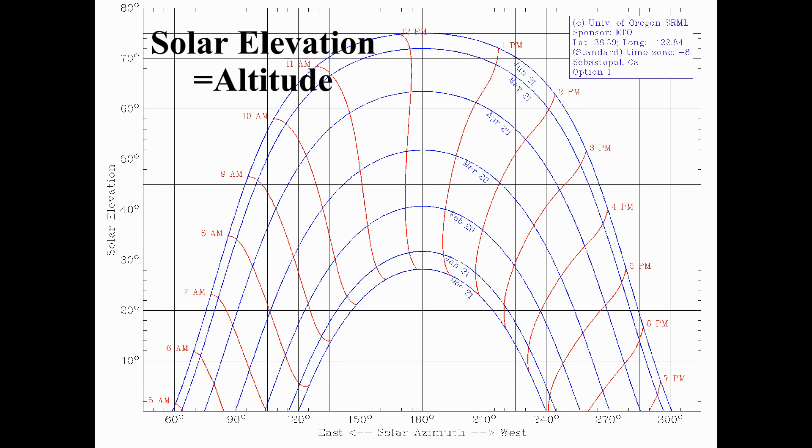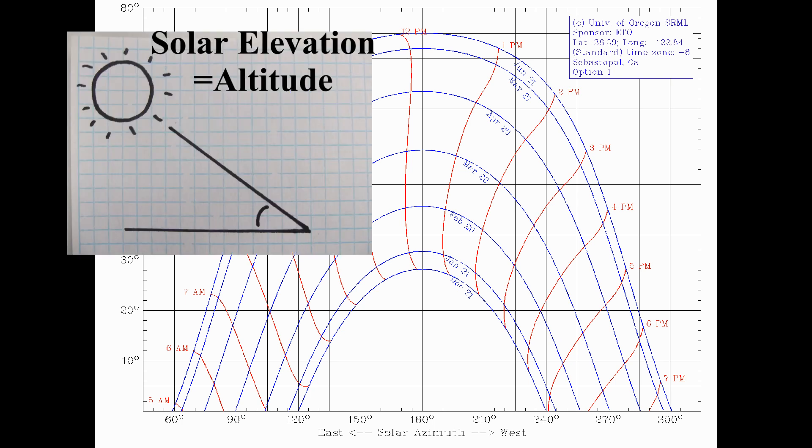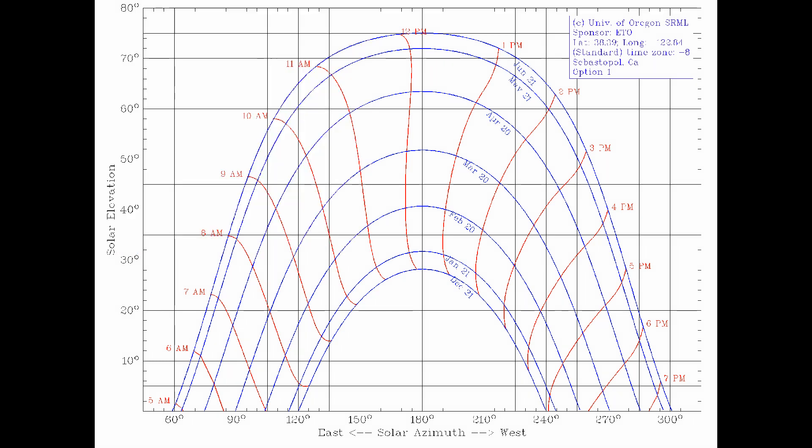The y-axis is the sun's elevation or altitude. The altitude measures the sun's height in the sky from the horizon. Each sun path chart is created for a specific location.